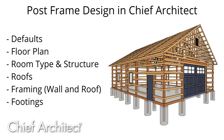We're going to begin by adjusting the program defaults to be optimized for post frame design. We will then draw out our initial floor plan, adjust the room type, and take a look at some of the structural settings. We'll adjust our roofs and framing for both walls and roofs throughout the demonstration, and we'll conclude by placing footings.